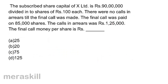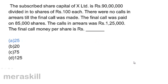The subscribed capital of X Limited is 90 lakhs divided into shares of rupees 100 each. There were no calls in arrears till the final call was made. The final call was paid on 85,000 shares and the calls in arrears was Rs. 1,25,000. We have 90,000 total shares; 85,000 paid, leaving 5,000 in arrears. 1,25,000 divided by 5,000 gives Rs. 25 per share. Correct answer is A, 25.